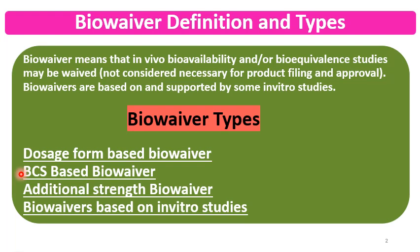There are mainly four types of BioWaivers found in different literature on regulatory agency websites and guidelines. BioWaivers are granted based on dosage forms — the first type is dosage form BioWaivers. The second is BCS-based BioWaivers, that is Biopharmaceutics Classification System based BioWaivers, which are applicable to BCS Class 1 and BCS Class 3 drugs.